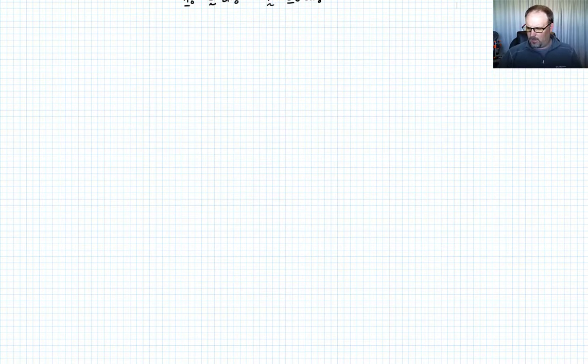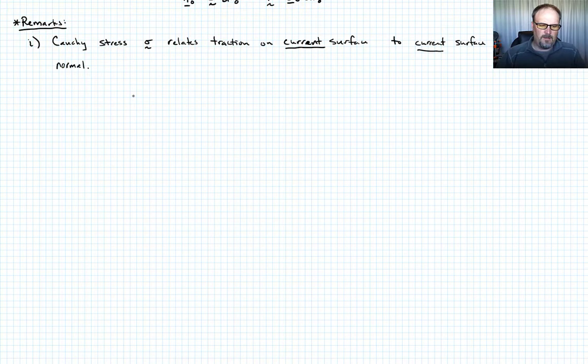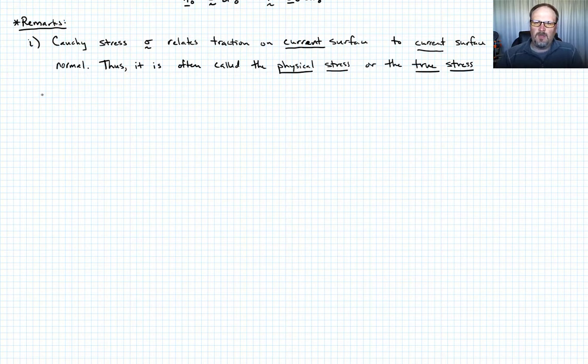Let me give you some remarks. Number one, and I'm going to say in words what I've already said a little bit here. The Cauchy stress sigma relates traction on the current surface to the current surface normal. So because of this, we often call the Cauchy stress the physical stress or the true stress.